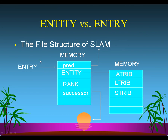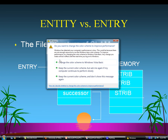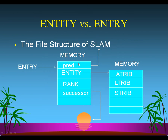In SLAM, we have what are called entry pointers, where we point to a location in memory where we have information about the entry that's in the file system. Within that information is included an entity pointer, which we've already discussed. An entity pointer points to a location in memory where the attribute A-TRIB, L-TRIB, and S-TRIB information is stored. Both the entity pointer and entry pointer point to locations in memory. If something is in a file, it will have an entry pointer.